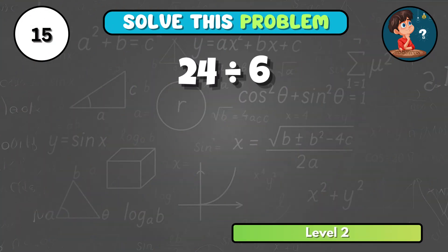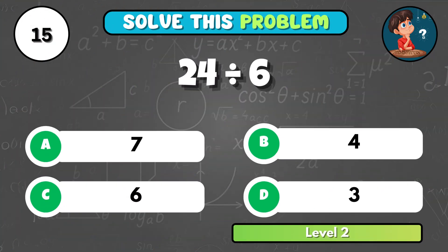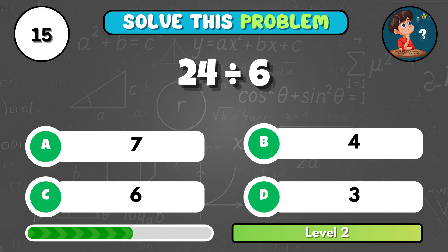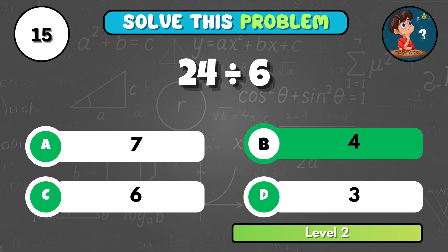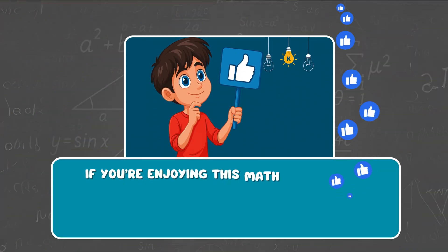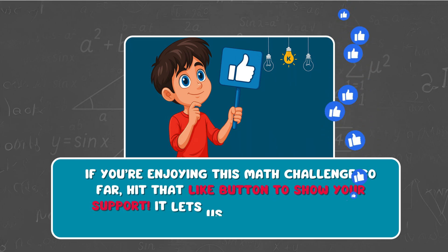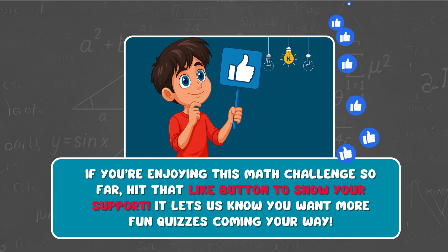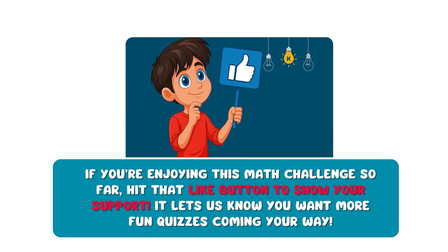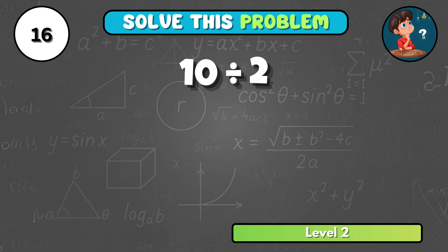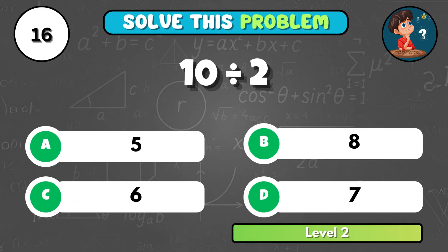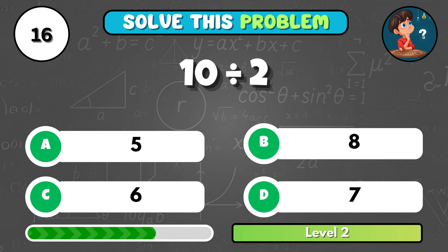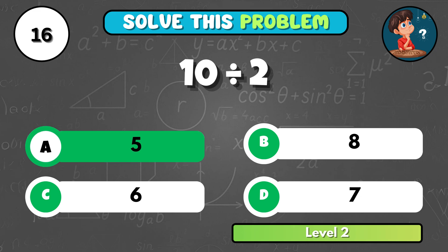If you divide twenty-four by six, what do you get? That's B, four. Loving this math challenge so far? Hit the like button to show your support. What is ten divided by two? It's A, five.